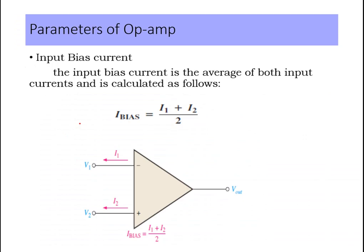The second parameter is input bias current. Input bias current is the average bias current flowing at the two input terminals of the op-amp. I1 is the current flowing through the inverting input terminal, and I2 is the current flowing through the non-inverting input terminal. It is given as I_bias = (I1 + I2) / 2.